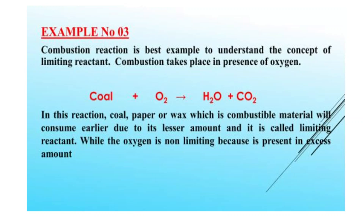Teesri example surroundings mein ho rahe reactions se hai. Combustion reaction jo hamare gharon mein hota hai — brick kiln yaani intein pakane wala bhatta, usmein coal as a fuel use hota hai. Coal wahan limiting reactant hai, oxygen atmosphere se aa rahi hai aur excess mein maujood hai. Jab coal burn hota hai to carbon dioxide aur water banta hai, lekin jab coal khatam ho jaata hai to brick kiln ke andar combustion process ruk jaata hai.